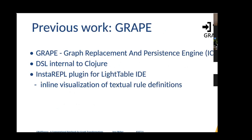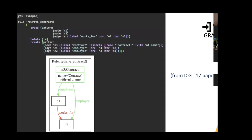We've done previous work on GRAPE — the Graph Replacement and Persistence Engine — discussed at ICGT 2017 in the tools track. It is an internal DSL to Clojure, integrated specifically with the LightTable IDE and the Insta-REPL plugin. It already supported some sort of inline visualization of the graph transformation rule definitions. Here is a screenshot from the ICGT 2017 tool paper: a textual rule definition is shown, and the graphical representation of that rule is generated and overlaid into the IDE, but not really part of the document.